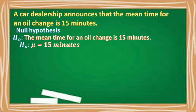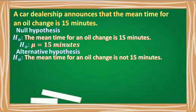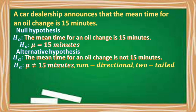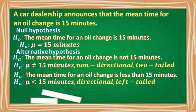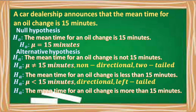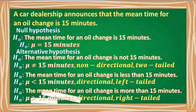And for the alternative hypothesis, it will be: the mean time for an oil change is not 15 minutes. In symbol, we're going to use mu is not equal to 15 minutes because it is non-directional and it is a two-tailed. We can also use: the mean time for an oil change is less than 15 minutes — in symbol, mu is less than 15 minutes, because it is directional and it is a left-tailed. Another option: the mean time for an oil change is more than 15 minutes — in symbol, mu is greater than 15 minutes, because it is directional and it is a right-tailed.